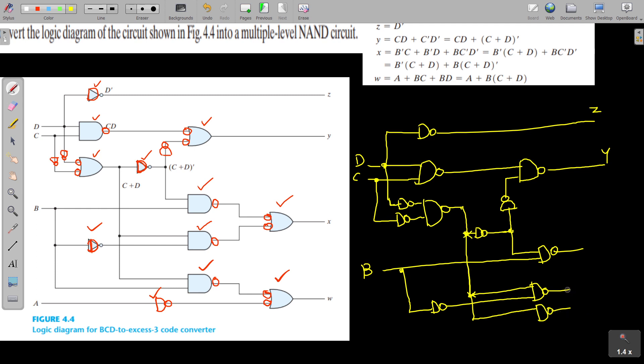So this NAND gate input is given as input to another bubble OR circuit. That means it is a NAND gate. So the output is here, X.